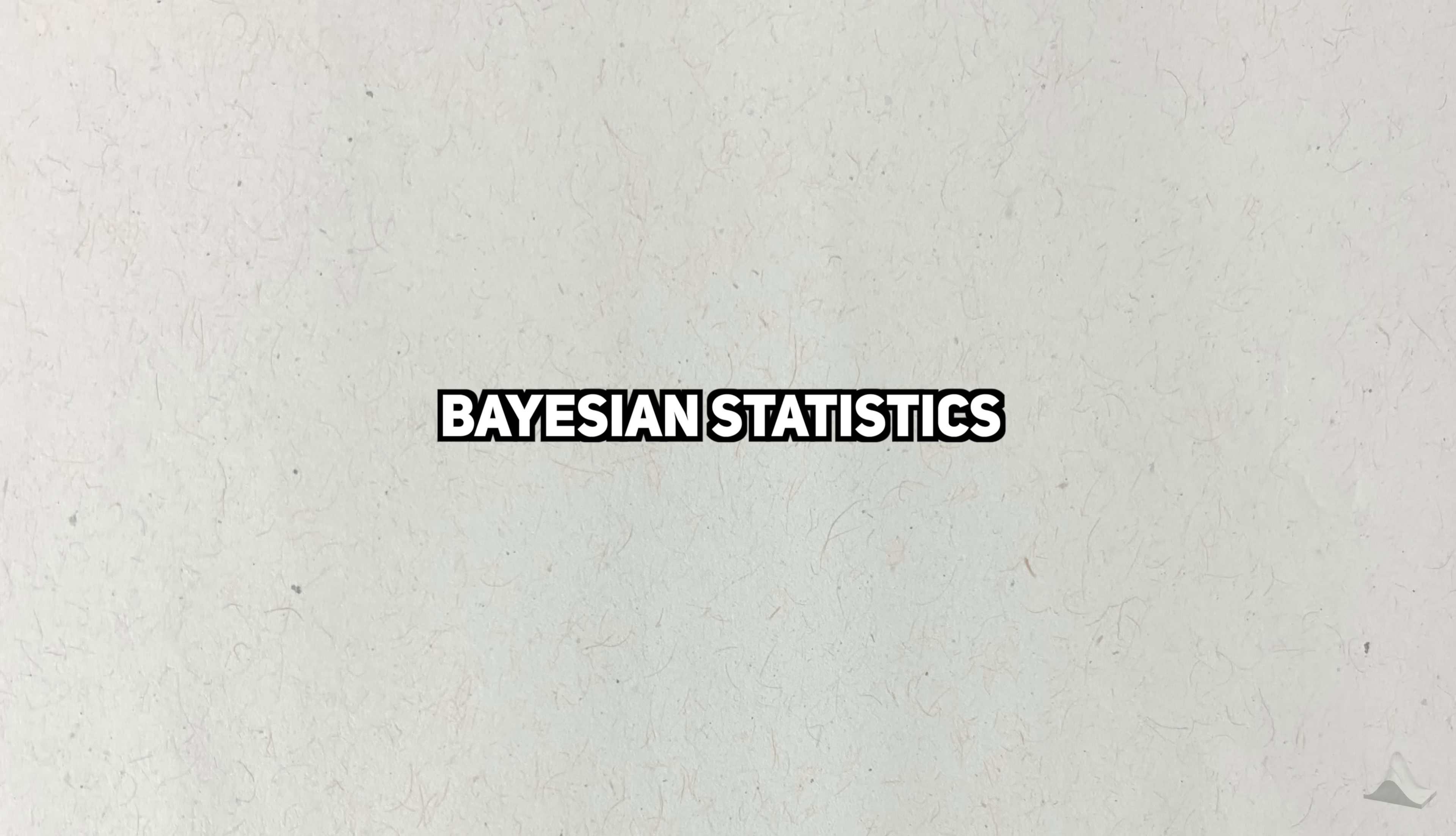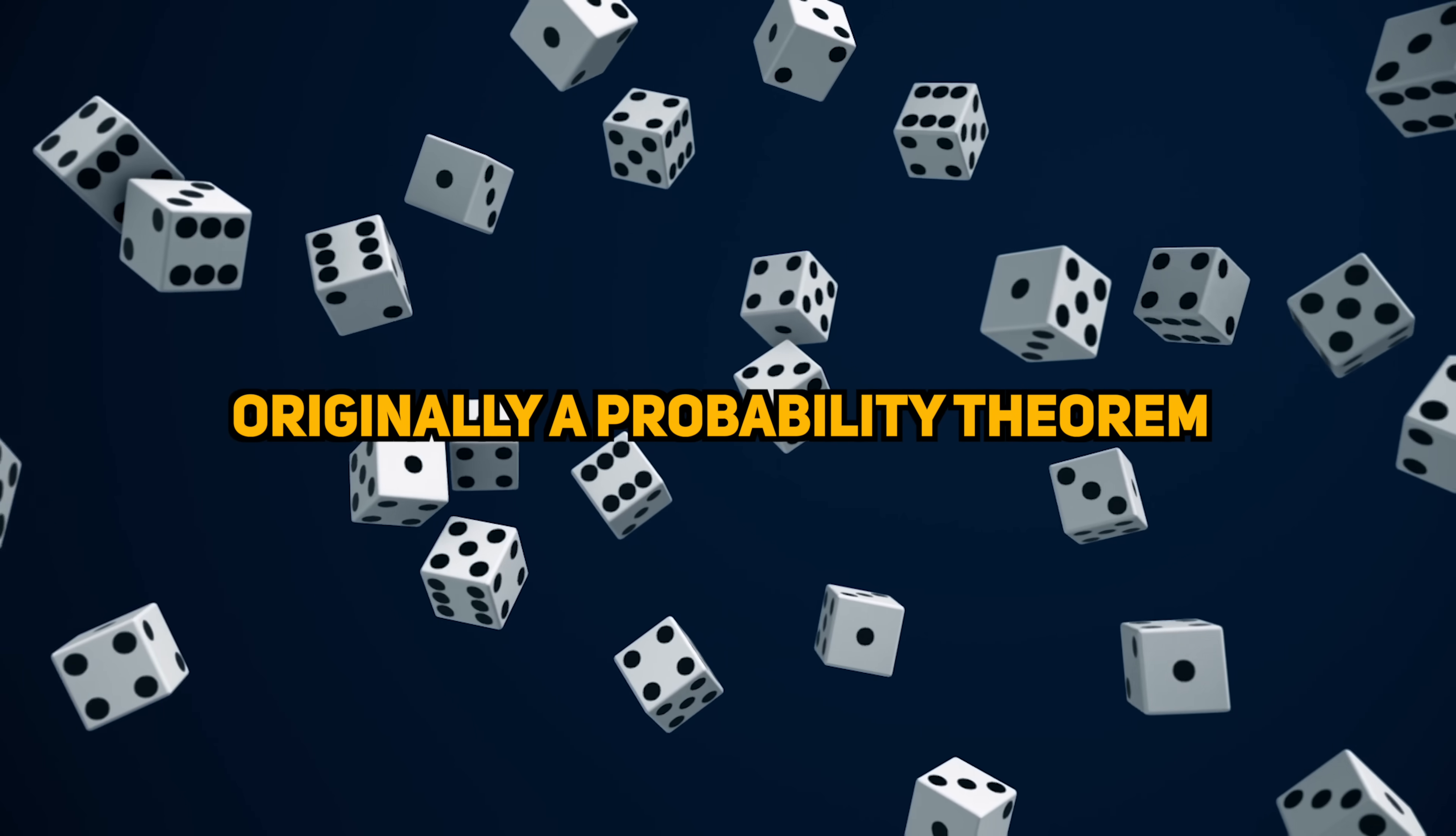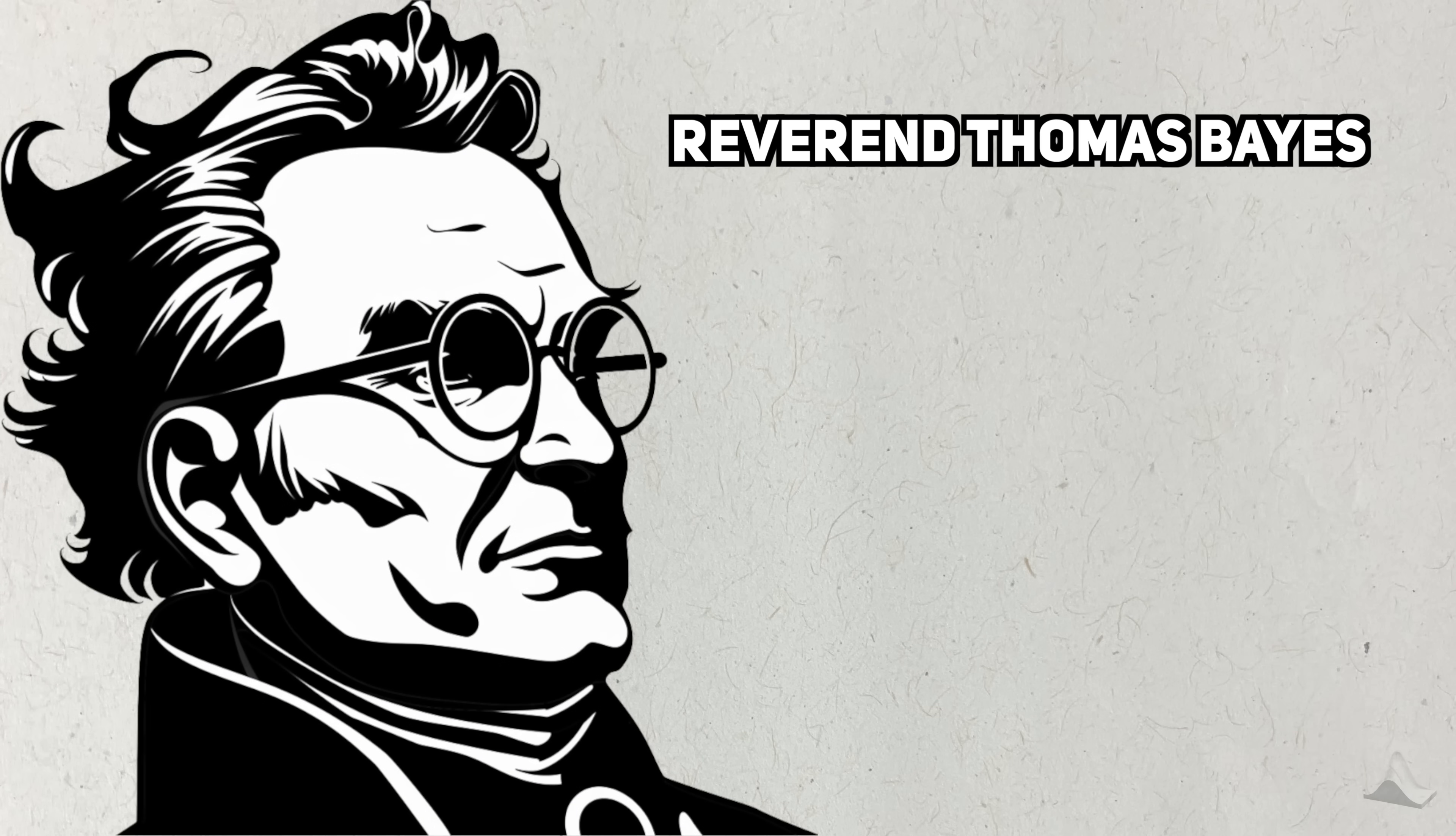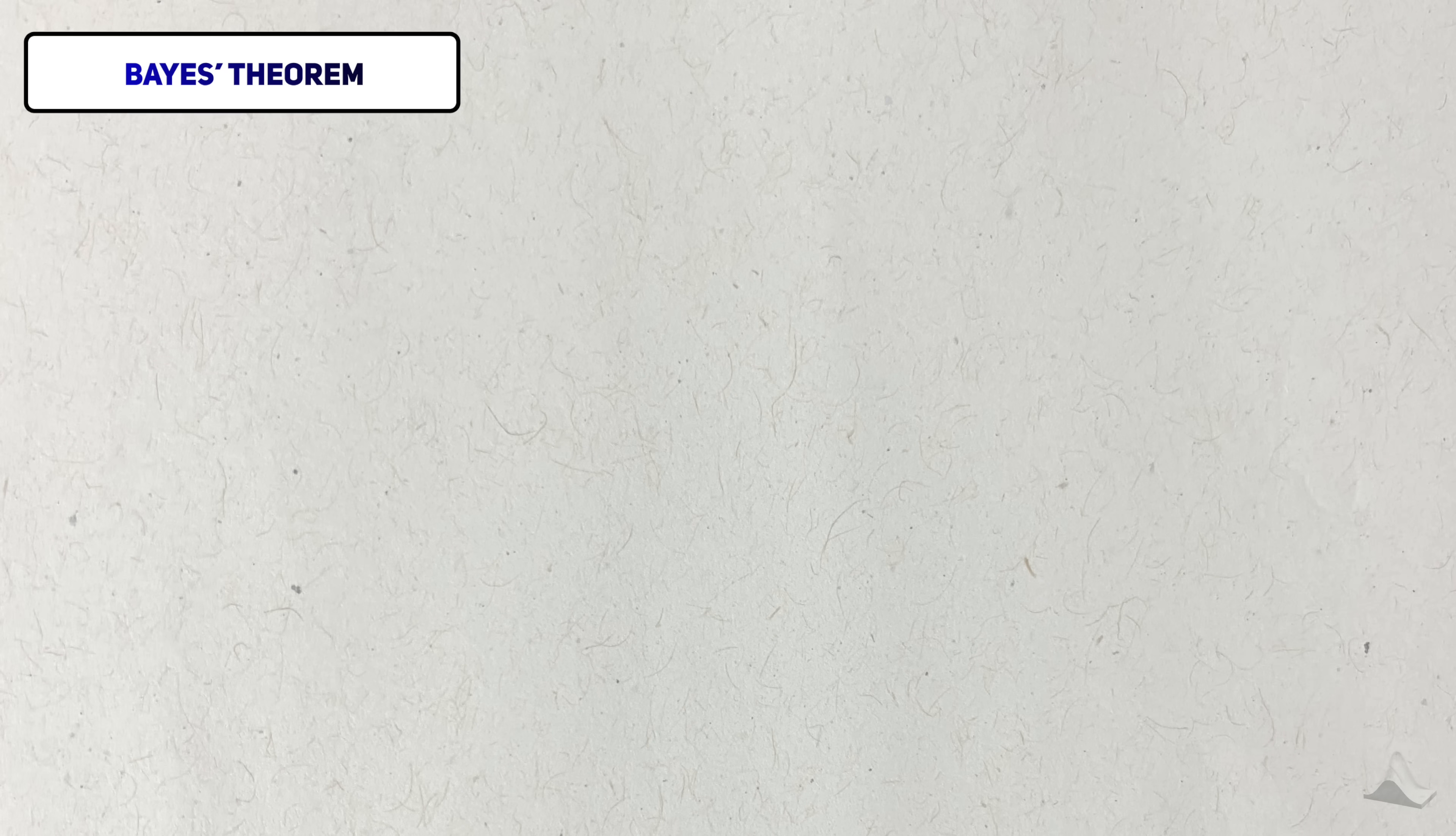To understand Bayesian statistics, you need to understand the theorem that gave it its name. Bayes' theorem originally comes from probability, not statistics. It's named after Reverend Thomas Bayes, who published about this theorem in 1763. Bayes' theorem goes like this.